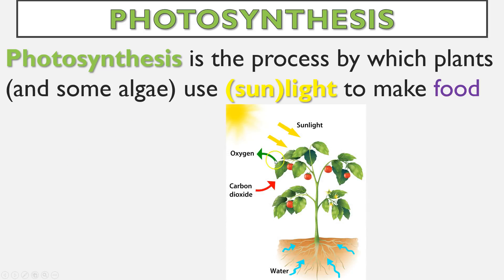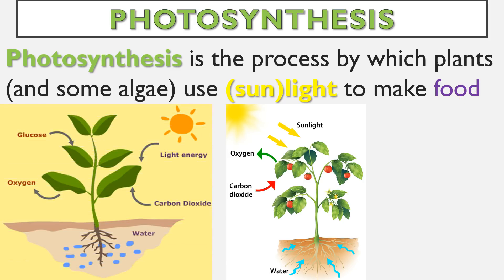Light is going to enter a plant, carbon dioxide is entering as well, and water is entering. The main thing is it's going to be making food — not only their food, our food as well. We cannot make our own food; we are not autotrophs. But plants are, so they make their own food, and that food is glucose.